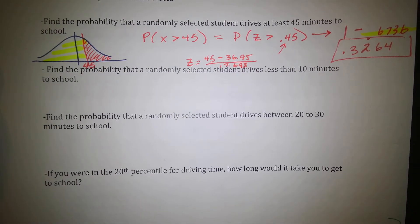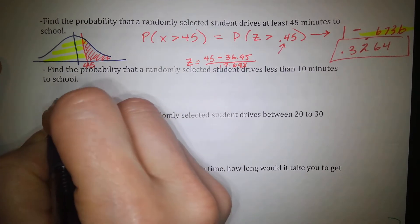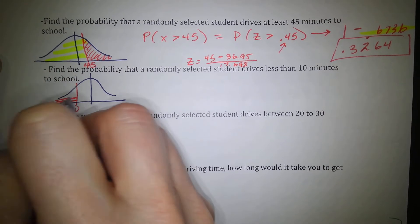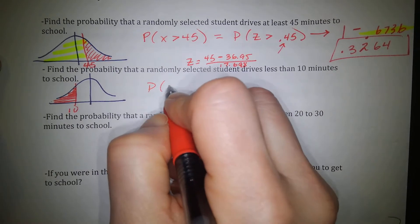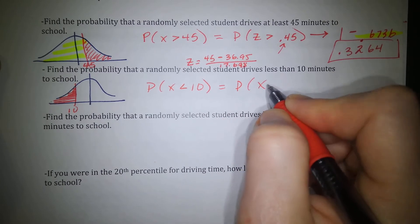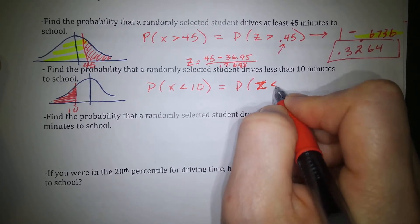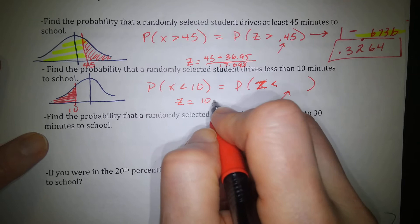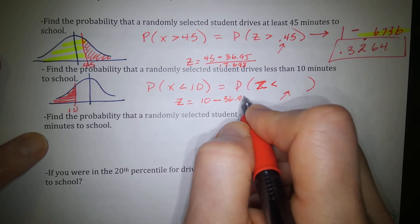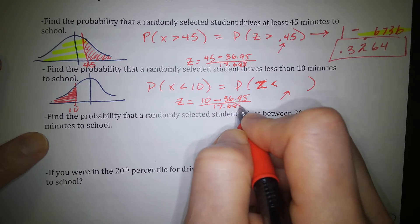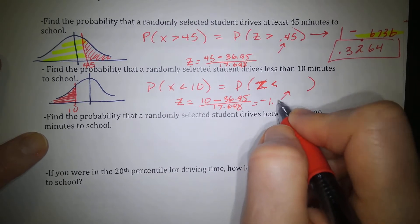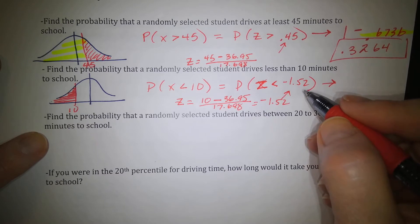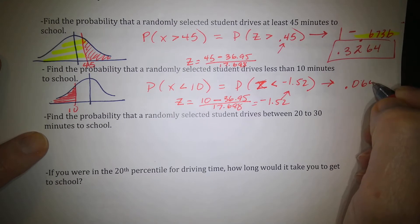Next, find the probability that a randomly selected student drives less than 10 minutes to school. Ten is off to the left-hand side. The probability a student drives less than 10 minutes means we find the z-score: z = (10 − 36.95) / 17.698, which gives a z-value of negative 1.52. When I look up −1.52 in the z-table, the probability is 0.0643.